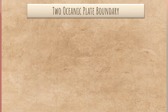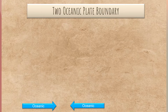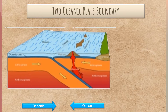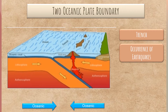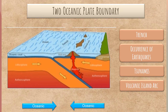The second type of convergent boundary is the two oceanic plate boundary. It is where one oceanic plate collides with another oceanic plate. Because of that, there is a formation of trench, occurrence of earthquakes, tsunamis, and volcanic island arc. The leading edge of the subducted plate will eventually reach the mantle, causing it to melt and turn into magma. The molten material will rise to the surface, creating a volcanic island arc parallel to the trench.